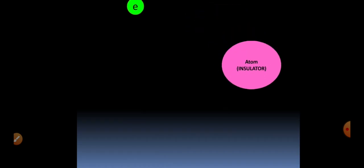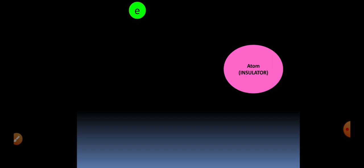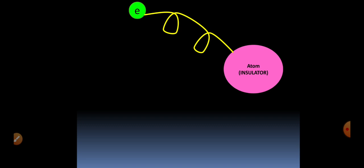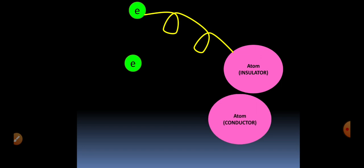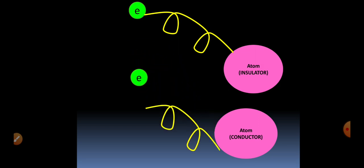If we talk about an insulator, electrons are tightly bonded to the atoms of the insulating materials — electrons are not free at all in an insulator. However, in a conductor the electrons are not bonded to the atoms; they are free and can move freely. These free-moving electrons are responsible for conduction, or carrying current through conducting wires.